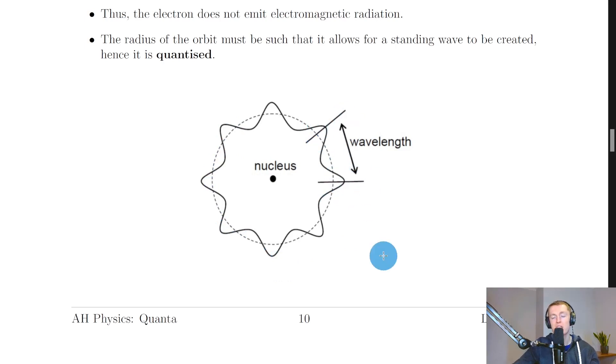And de Broglie proposed that the orbits of electrons in atoms would have a certain number of wavelengths, i.e., a quantised number of wavelengths. So here you can see just how many waves can fit into this orbit. So we have 1, 2, 3, 4, 5, 6, 7, 8. So if we take one wavelength to mean one wave, then we have eight waves fitting within this orbit.